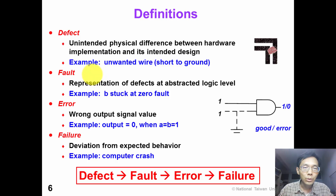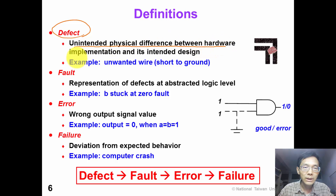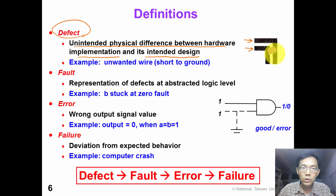Before we go into this chapter, we need to define some key words. First, a defect is an unintended physical difference between hardware implementation and its intended design. For example, on our right-hand side, suppose that two black wires are our intended design. However, during the implementation, we accidentally have a particle falling in between these two pieces of wires. This is what we call a defect. It may cause, for example, a short to ground effect.